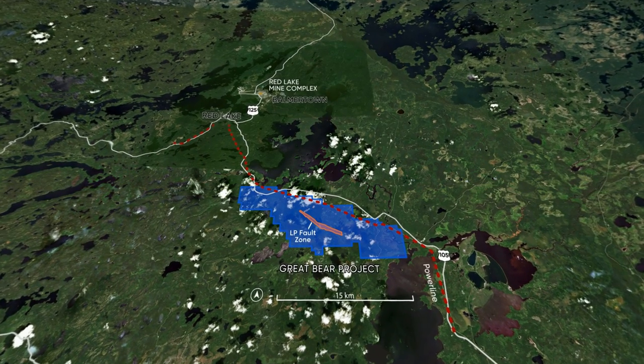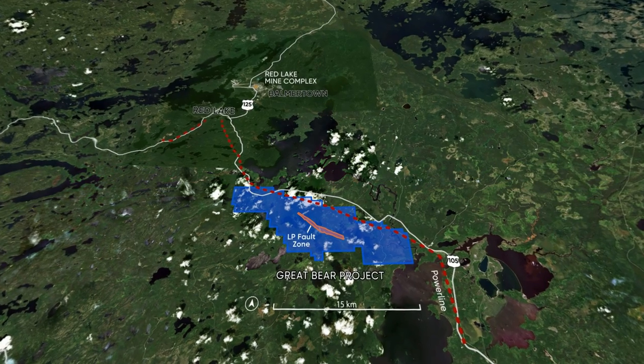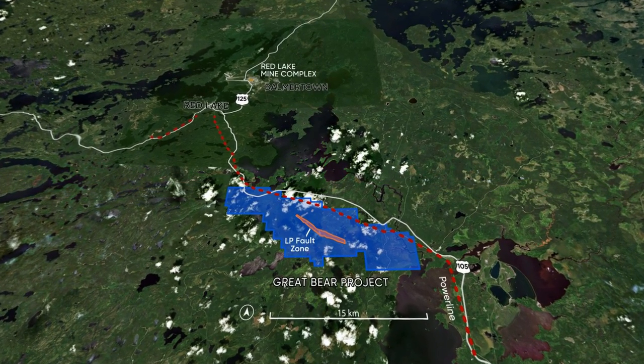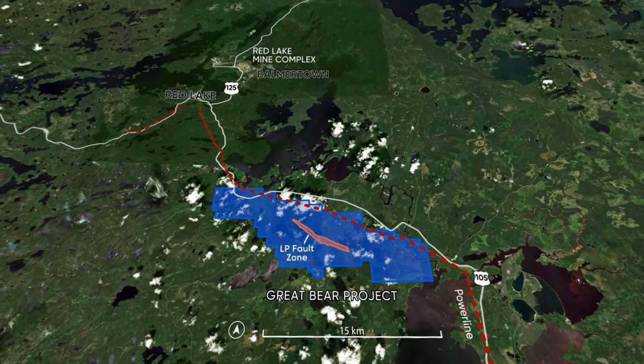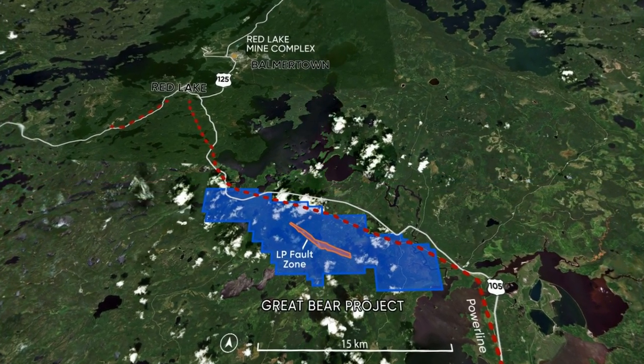Kinross Great Bear Project is located in the prolific Red Lake Camp in Northern Ontario and has excellent infrastructure access with a highway, power line and natural gas pipeline passing through the property.